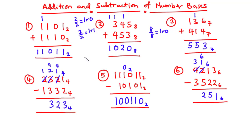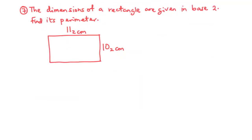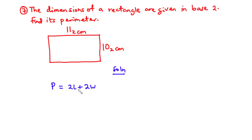Now let's move on to more complex examples. For example 7, the dimensions of a rectangle are given in base 2 — find its perimeter. We have length 11 base 2 centimeters and width 10 base 2 centimeters. The perimeter of a rectangle is 2l plus 2w. Because we haven't done multiplication of number bases yet, we expand this to l plus l plus w plus w.